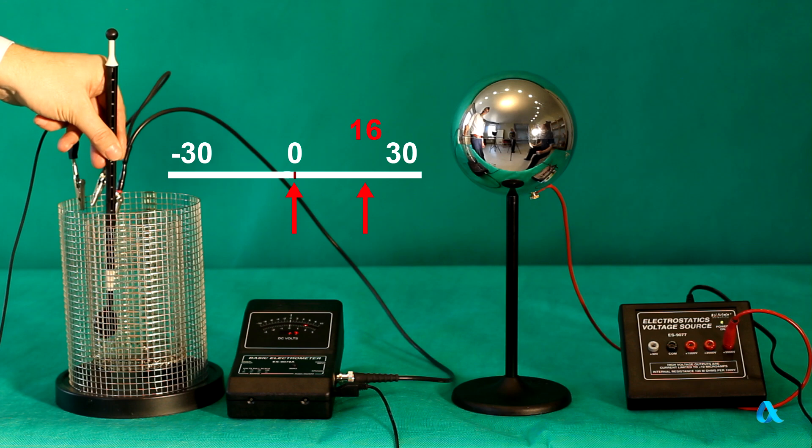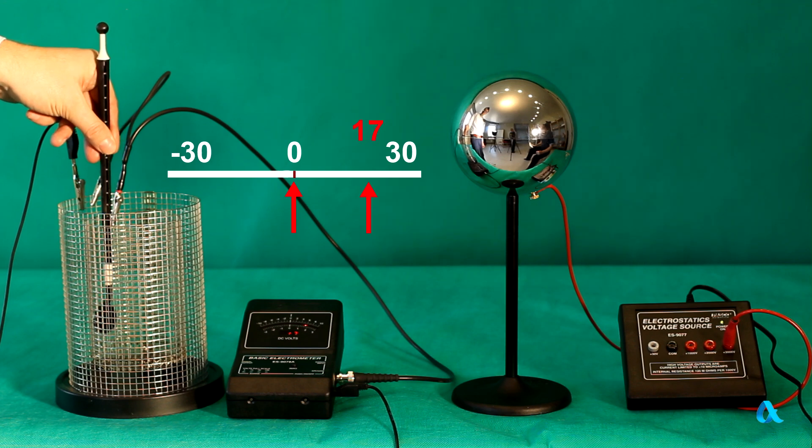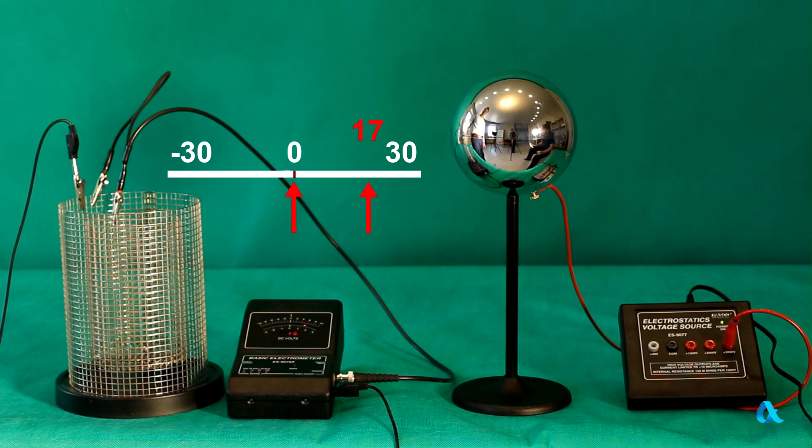Now we touch the wall of the inner mesh with the plate and remove it from the cage. The electrometer's readings have not changed.